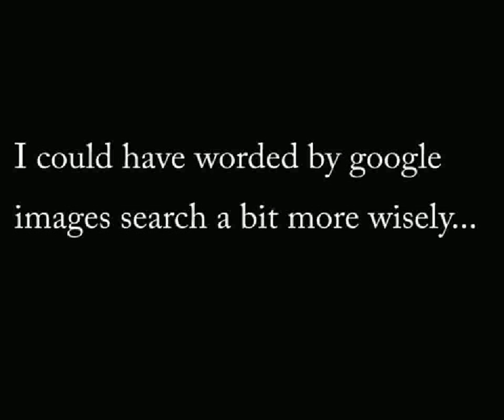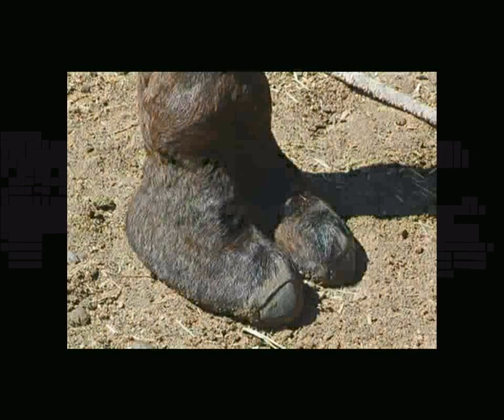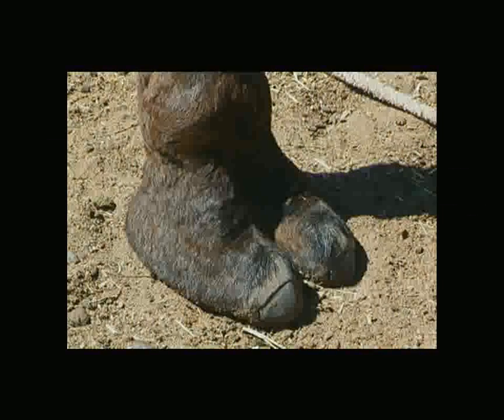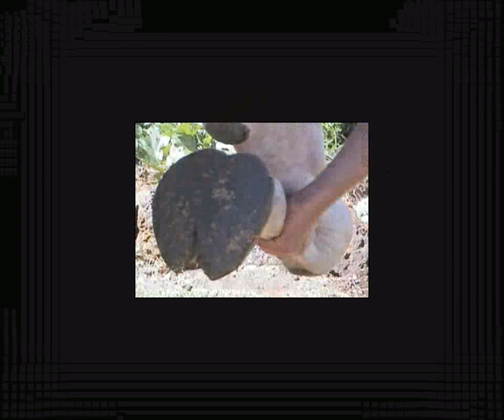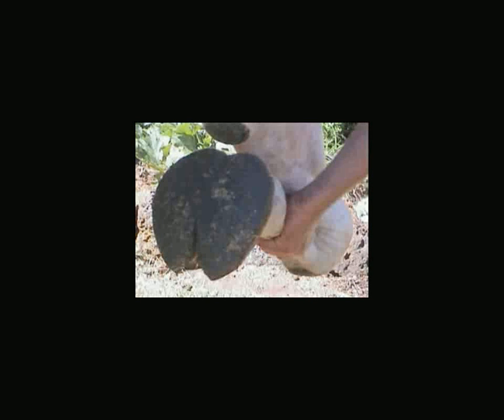Camels have fleshy pads. They've got two toes because they've lost the other ones. They share a common ancestor with all tetrapods, so they originally had five digits, but they lost them, and now they've just remained with two fleshy pads.